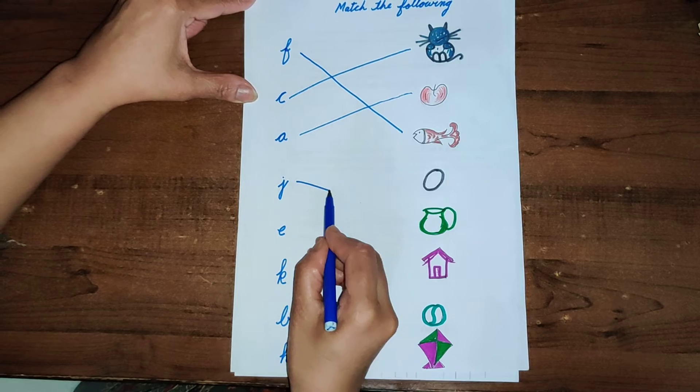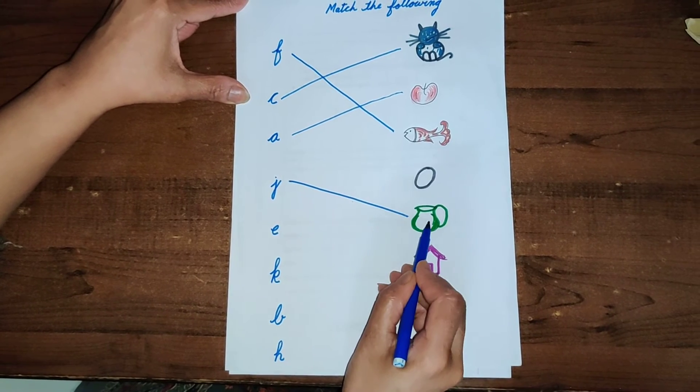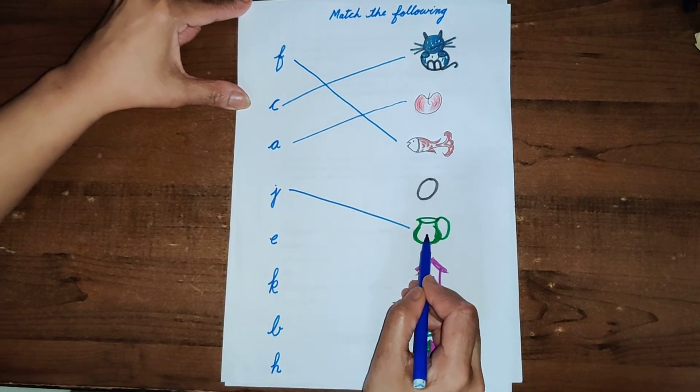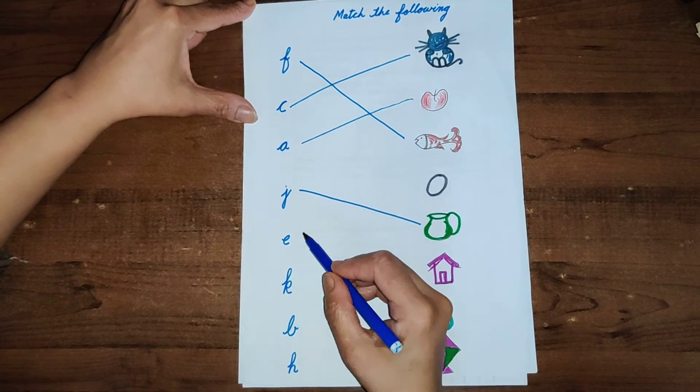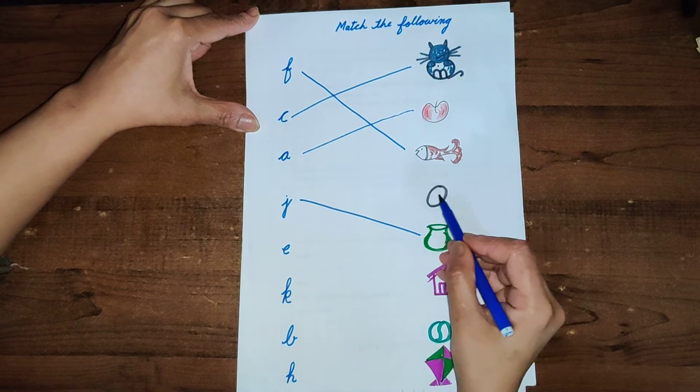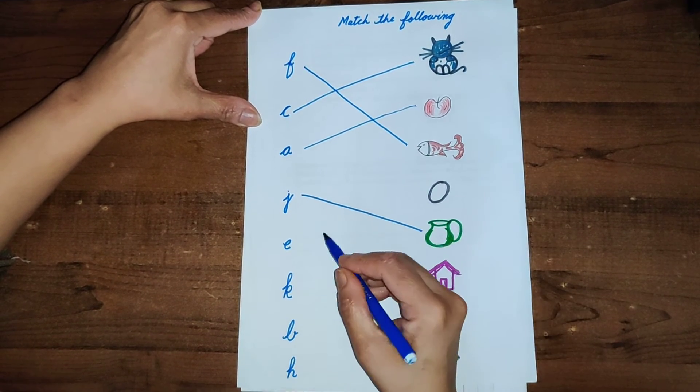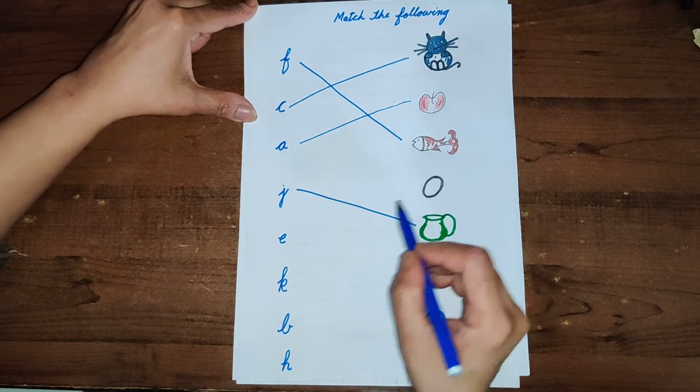Here is the picture of jug. We have joined this J with jug. Then it is E, E for egg, elephant, anything else can be there, but I have drawn a picture of an egg. E for egg.